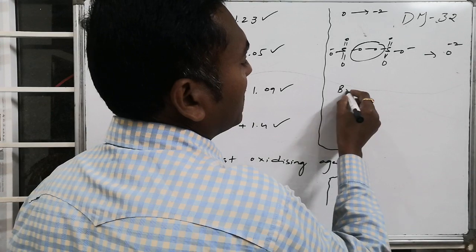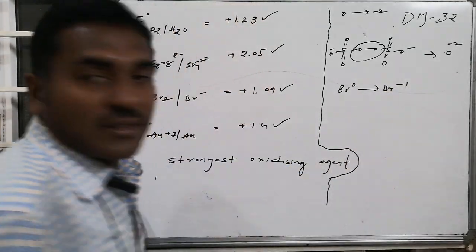Br0 is converted to Br minus 1, hence it is also a reduction.